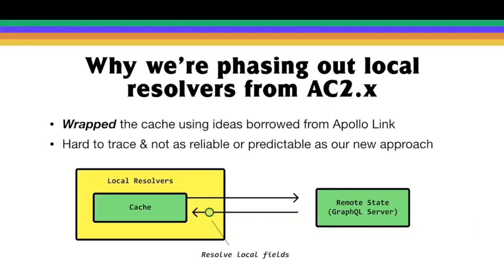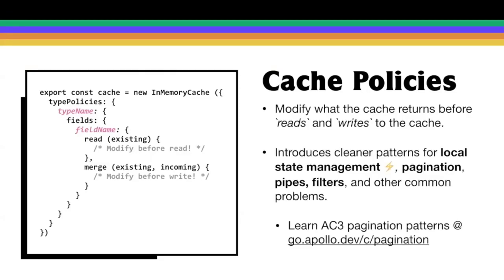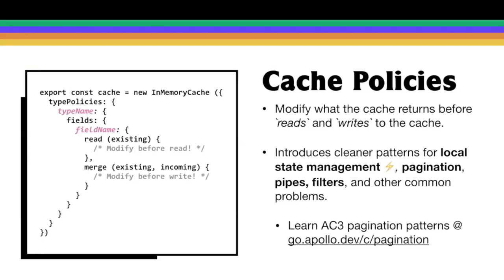The new approach is called cache policies. With this, for a particular type and a particular field within that type, we can modify what the cache returns before reads and before writes to the cache. There's a ton of features packed into this, but I'm most excited that it introduces cleaner patterns for local state management — things like pagination, pipes and filters, and other very common things we need to address in client-side apps.